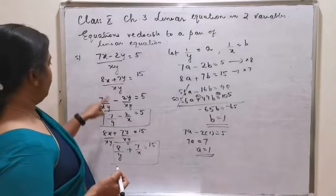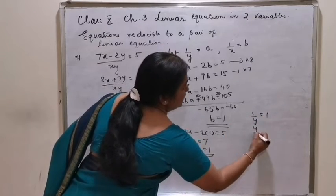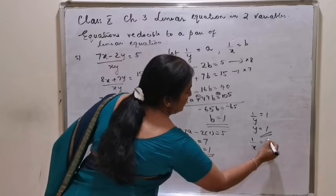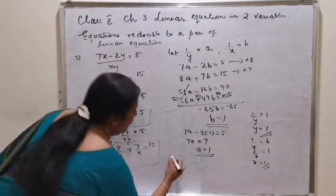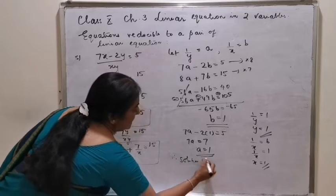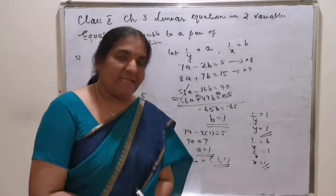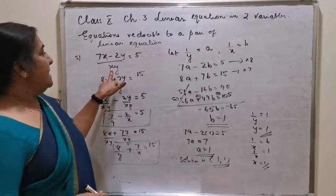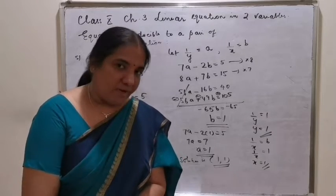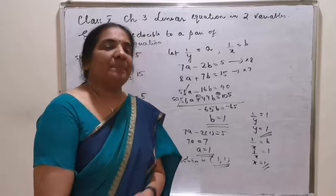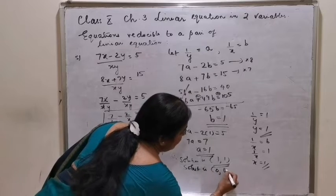Substituting back: 1 by y equals a equals 1, so y equals 1. 1 by x equals b equals 1, so x equals 1. Therefore, the solution of this equation is x equals 1, y equals 1. This is a special type of equation where x and y have power 2, which shows it can have two sets of values. Another pair of solutions is 0, 0 also.